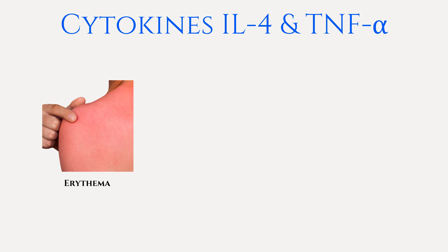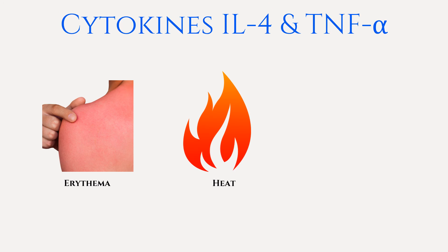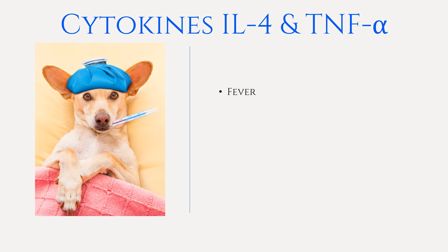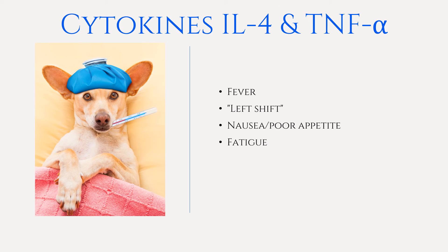The local effects of these cytokines include erythema, heat, and edema. Systemic effects include fever, as they can travel to the brain and act as pyrogens, a left shift in white blood cell count due to increased chemotaxis of neutrophils — the phrase left shift specifically refers to an increase in the amount of immature neutrophils — as well as nausea, poor appetite, fatigue, and complement protein synthesis as they travel to the liver and stimulate it to produce mannose-binding lectins, which in turn activate complement proteins in the bloodstream.